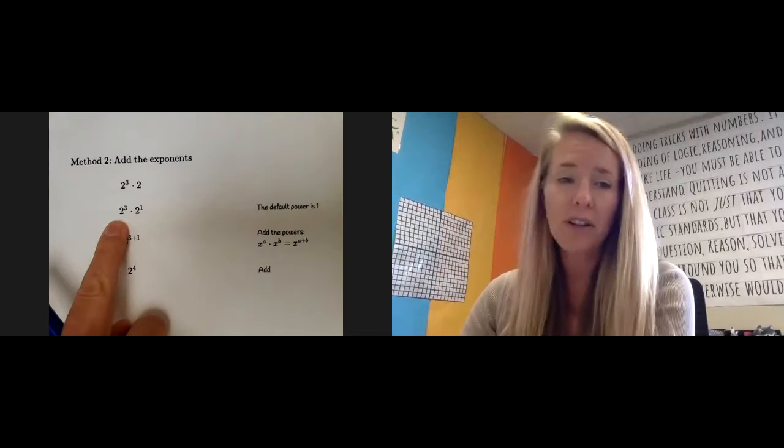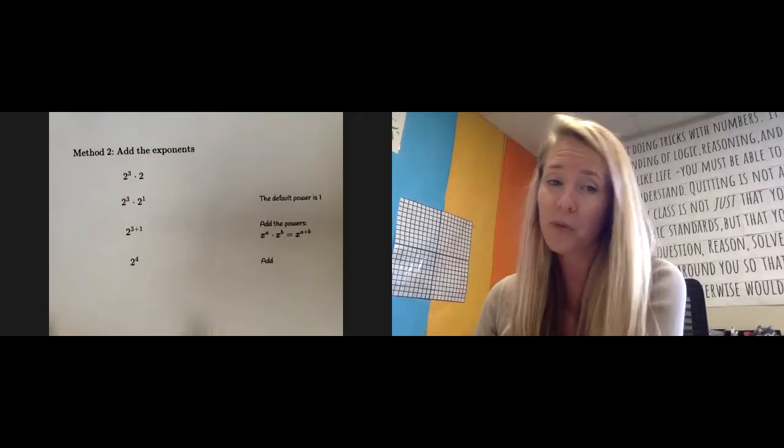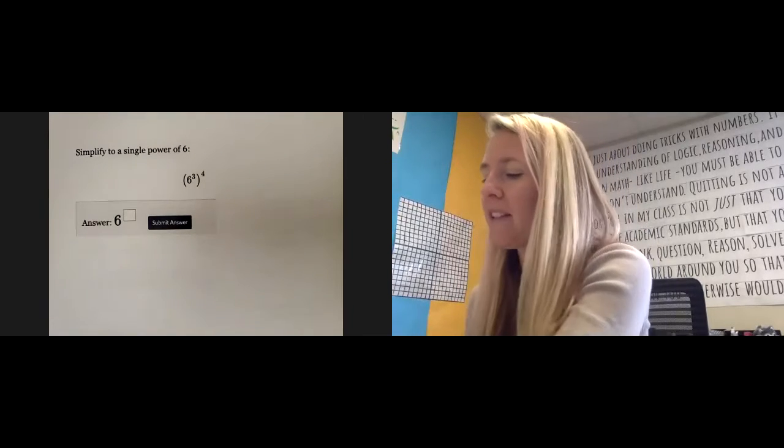Method two is just like, hey, the shortcut is instead of just drawing it all out, you remember that you just need to add them up. Three plus one is four. So take a look at method one and make sense of that first.